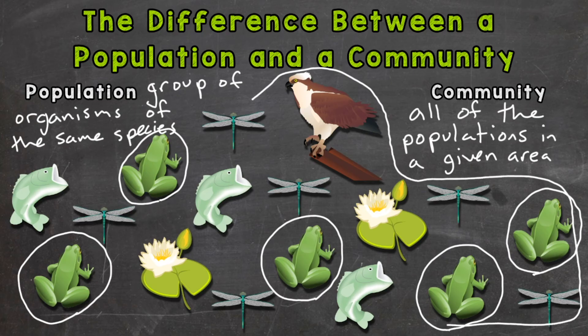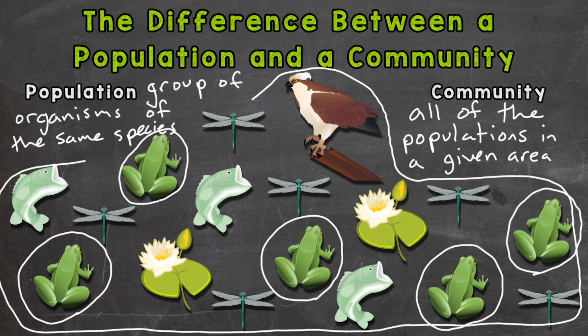So again, it's all of the populations in that given area — it's going to include all of the living things. Here is our circle around our pond community. So there you have it: the difference between population and community. A population is a group of organisms of the same species in a given area, and a community is all of the populations in a given area.